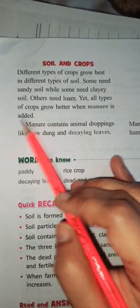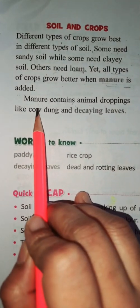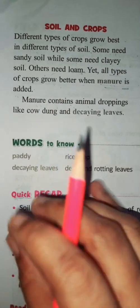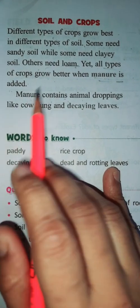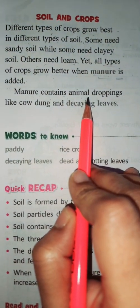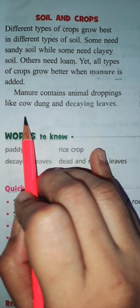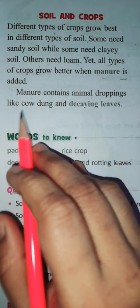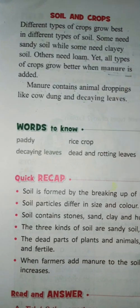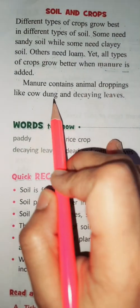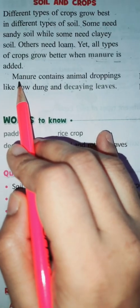All types of crops grow better when manure is added. Manure makes the soil fertile by adding humus and minerals. Manure is naturally made from dead and decaying plants and animal remains, as well as waste matter from cattle — like cow dung — and dead and rotting leaves.